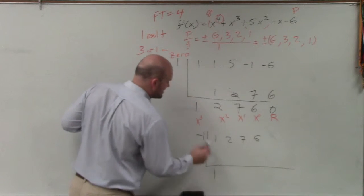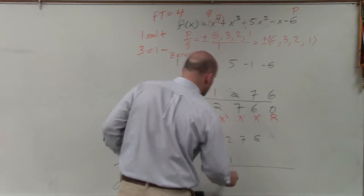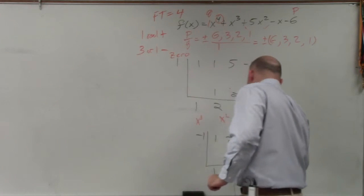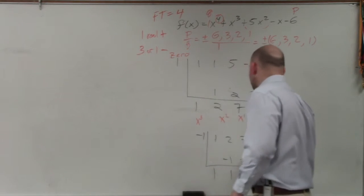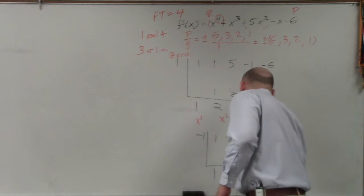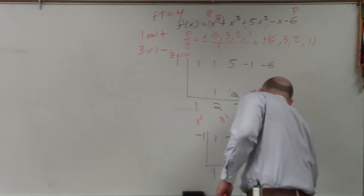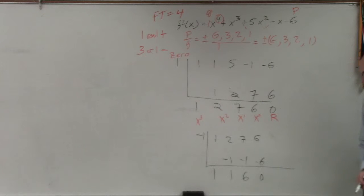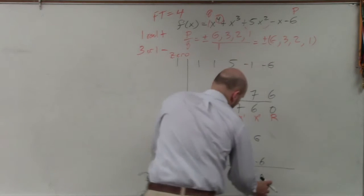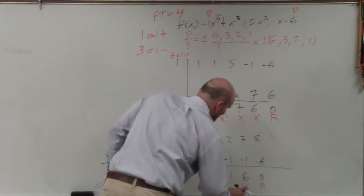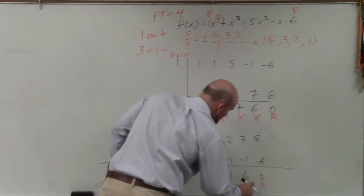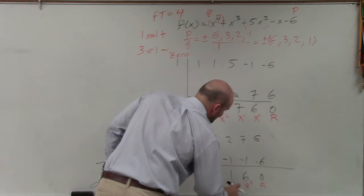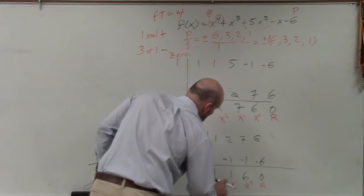So I bring down the 1. 1 times negative 1 is negative 1. 2 plus negative 1 is 1. 1 times negative 1 is negative 1. 7 plus negative 1 is 6. 6 times negative 1 is negative 6. 0, OK? So again, here's my remainder. Here's my constant, which is x to the 0. Here's my linear. And here's my quadratic.